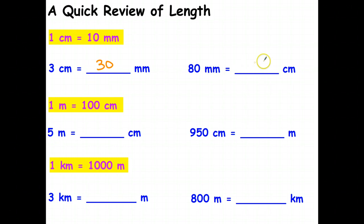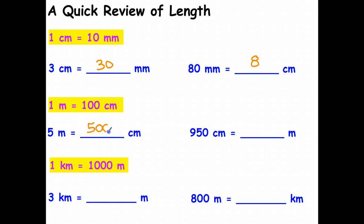If you're going from millimeters back to centimeters, because centimeters are larger, this answer has to be smaller. So that tells you you need to divide by 10, and 80 divided by 10 is 8. So 80 millimeters is the same length as 8 centimeters. Similarly, 1 meter is 100 centimeters, therefore 5 meters is going to be 5 times that, or 500 centimeters. Working back the other way, 950 centimeters converted to meters: divide by 100, which means you move your decimal point back two places, giving us 9.5 meters.